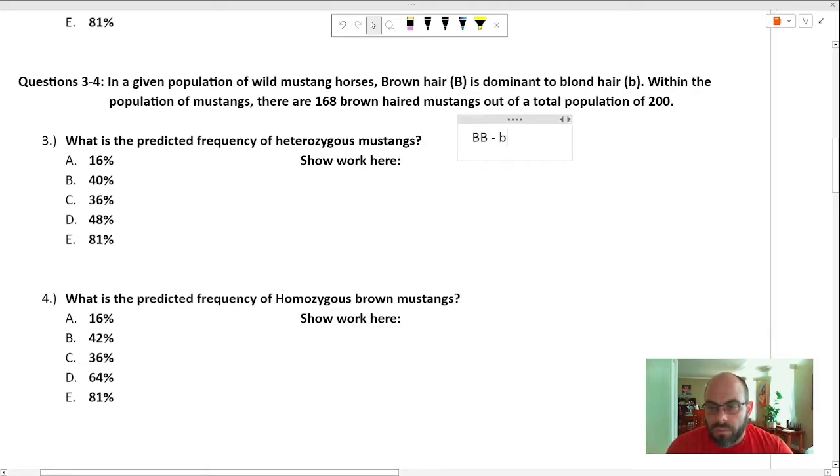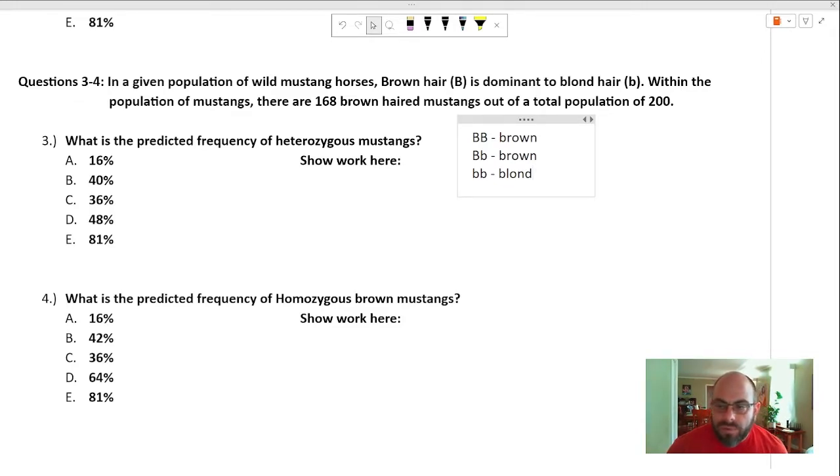Big B, big B is brown. Big B, little b is also brown. Dominant always expresses itself. Little b, little b is blonde. These are information that we're given. And we are also told that within the population of mustangs, there are 168 brown haired mustangs. And the first thing you're going to do is see that 168 and 200, you're going to divide them, and then you have a number. And that number is p squared plus 2pq equals a number. And you don't want to do that. So this is why I'm always saying you want to solve for q squared. And so how do we get q squared?